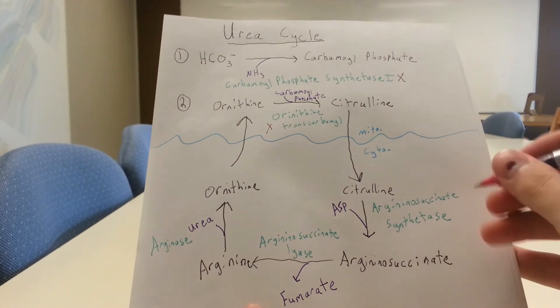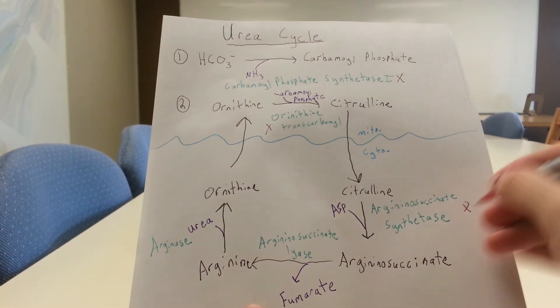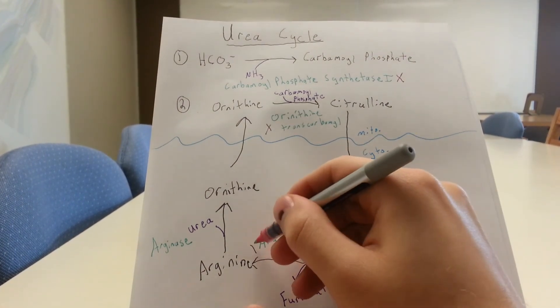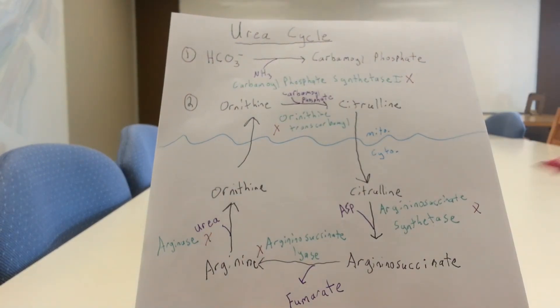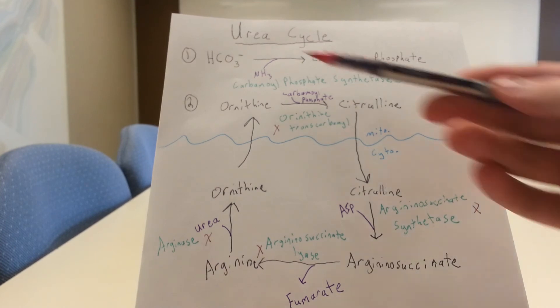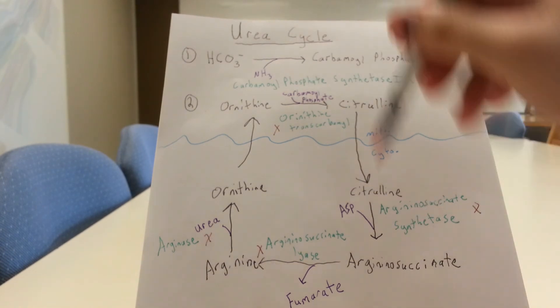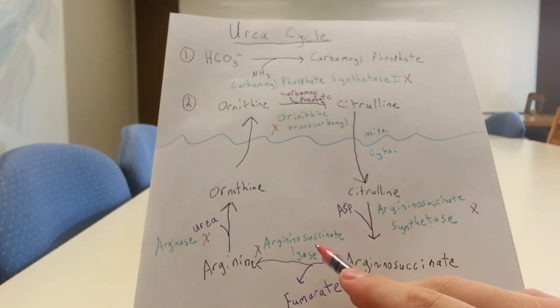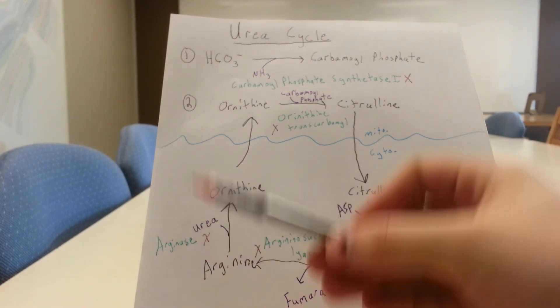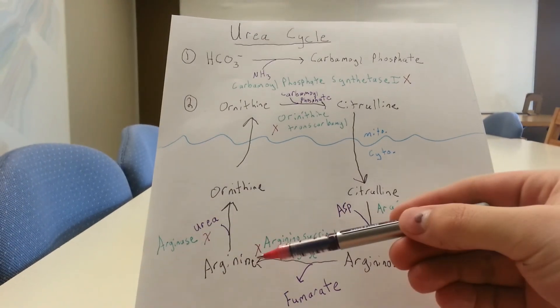And the same goes with all these other enzymes, other defects in the urea cycle. So you can have defects here, and it's really straightforward in terms of what builds up. So if you have a defect in argininosuccinate synthetase, you'll have a buildup of citrulline, and you'll have a buildup of ammonia too, because it's sort of backing up the cycle. You have a defect in argininosuccinate lyase, you're going to have a buildup of argininosuccinate and a buildup of citrulline. If you have a defect in arginase, you'll have a buildup of arginine.